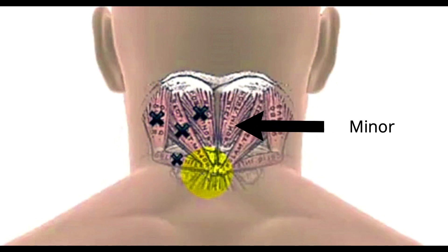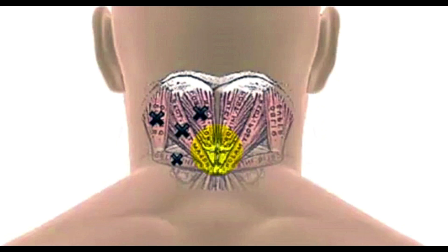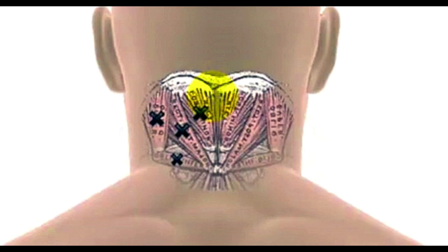The bigger muscle arises from the posterior spine of C2, and the smaller muscle arises from the tubercle of C1. C1 doesn't have a posterior spine — it's an unusual vertebra. Both run straight up and insert into the inferior nuchal line. The nuchal line is a line along the base of the skull, slightly above the foramen magnum, which is the big hole that the spinal cord comes through.